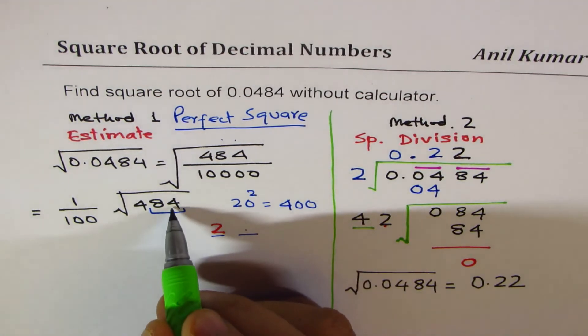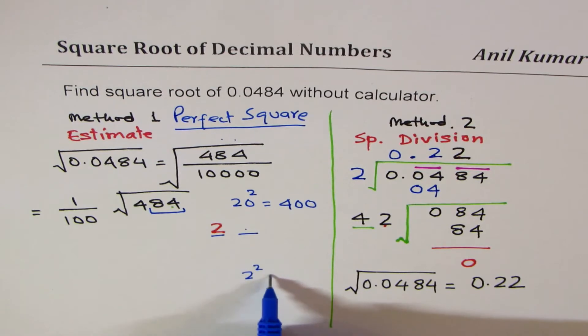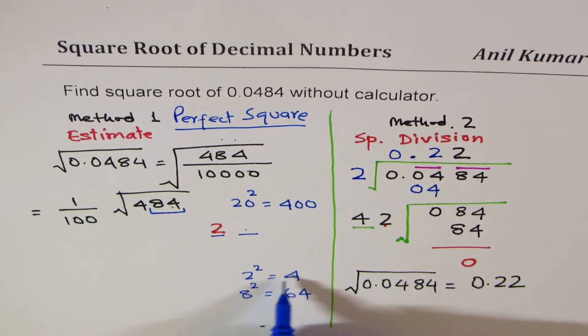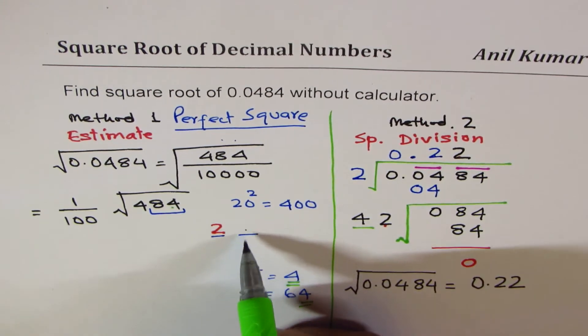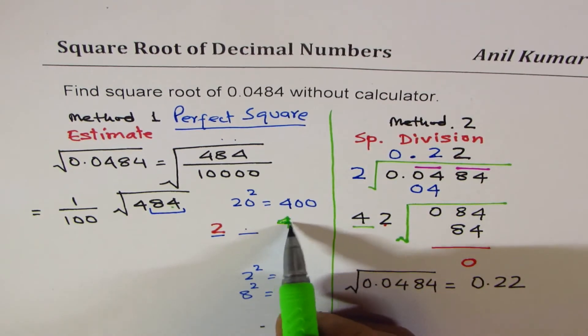Square of what number gives you 4? You know that 2 square is 4 and 8 square is 64. Both these numbers end with a 4. So I could have two things here: either I could have 2 or 8. Both end with 4.